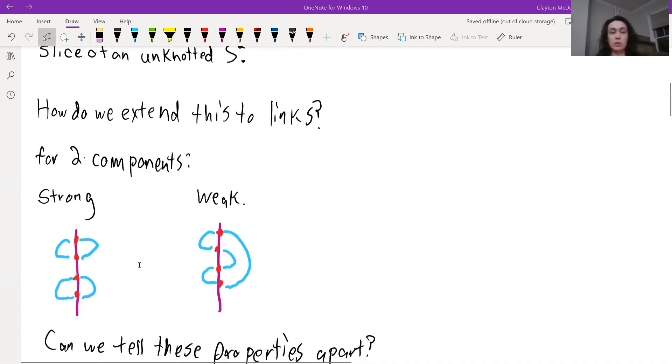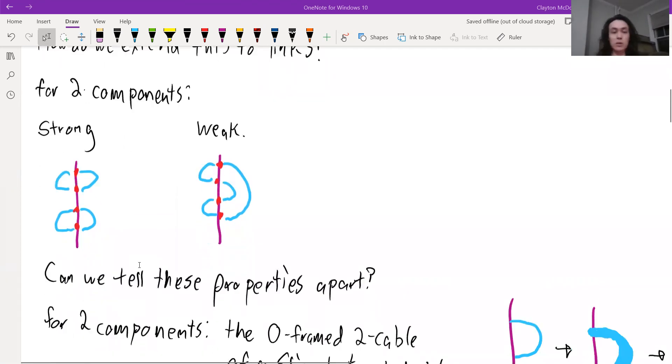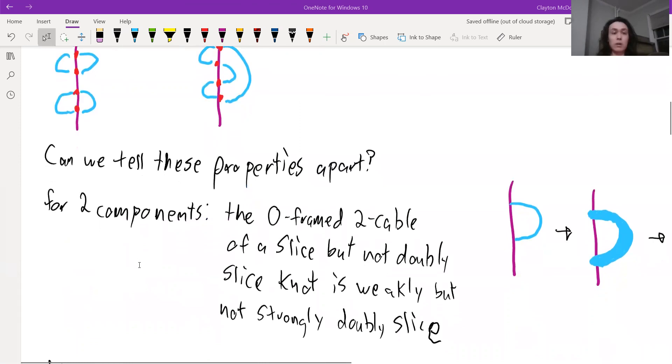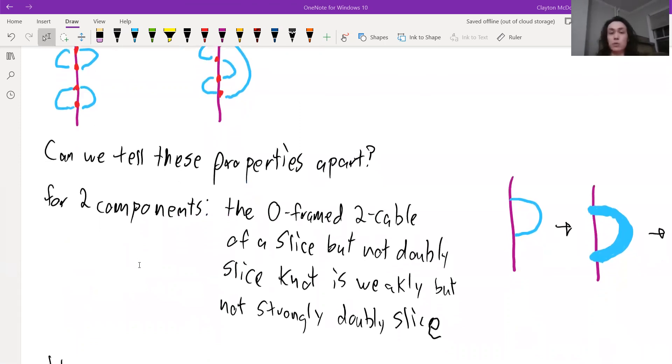And so a really basic question is can we tell these properties apart? And of course the answer is yes. It's actually not that hard. So for two components, the zero framed two cable of a slice knot is weakly but not strongly doubly slice.